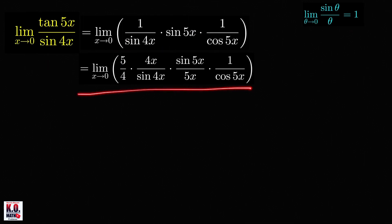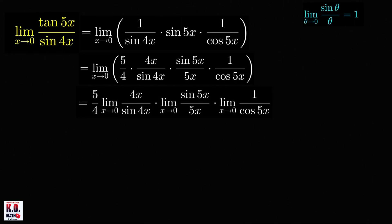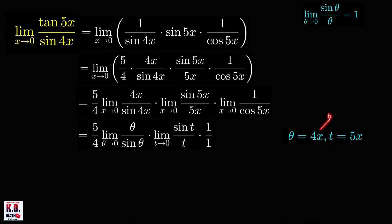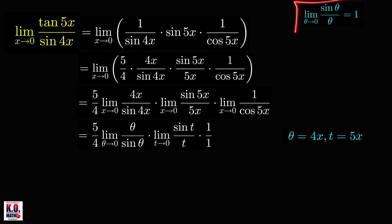From this we can already evaluate the limit. Taking the product of limits and making a change of variable — θ = 4x and t = 5x — and noting that as x approaches 0, both θ and t also approach 0. Applying the known result, we get 5 over 4 times 1 times 1 times 1, which is equal to 5 over 4.